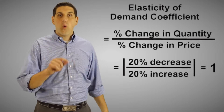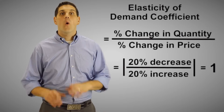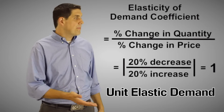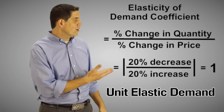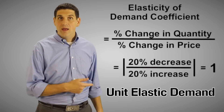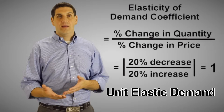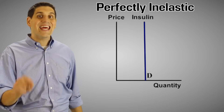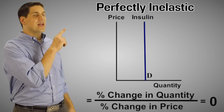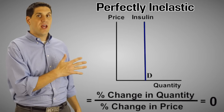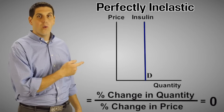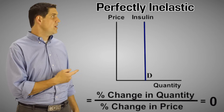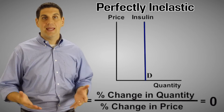Now, what if the percent change in quantity is exactly equal to the percent change in price? Well, that's something called unit elastic. Unit elastic is the idea that if the price goes up 20%, then the quantity goes down 20% — this pops out a one. A one means unit elastic. What if the demand is a vertical straight line, or something called perfectly inelastic? Well, that means an increase in price has no effect on quantity. Quantity doesn't change, so the elasticity of demand coefficient is zero.